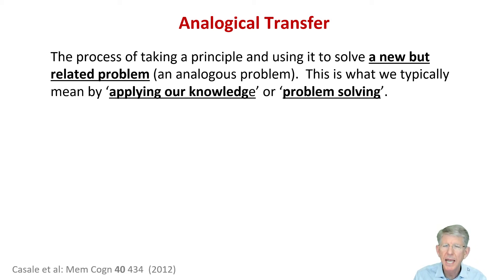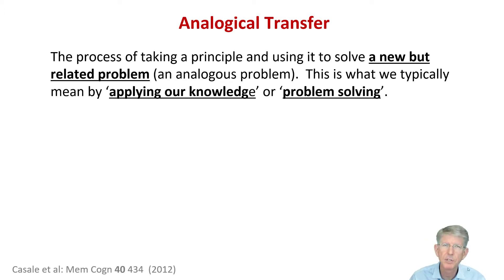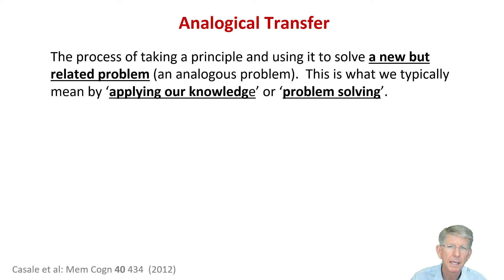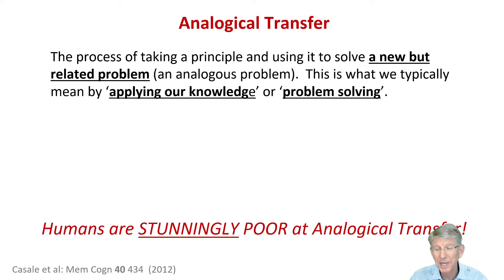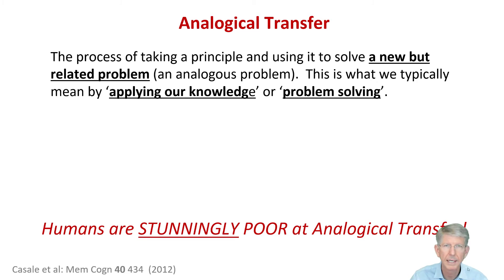It's what most everybody thinks about when we, quote, use our knowledge to solve a new problem. Analogical transfer is considered a high level of thinking. Turns out, however, humans are stunningly poor at analogical transfer.